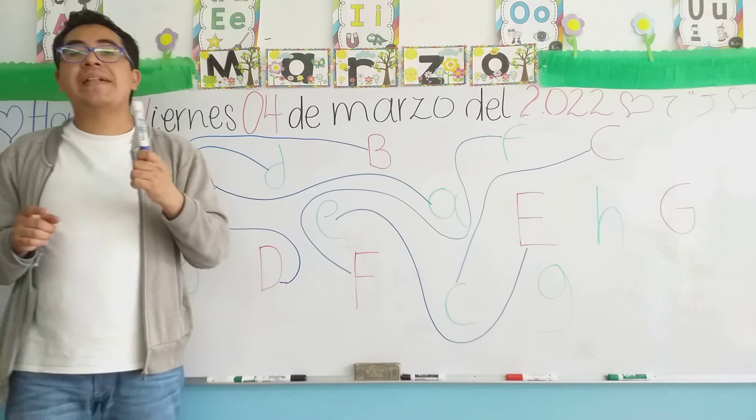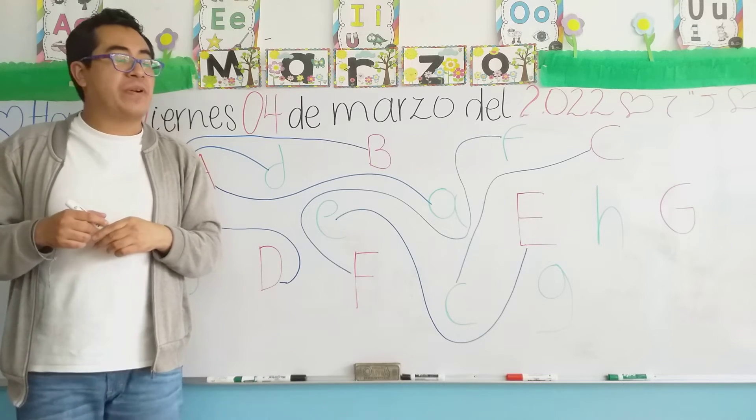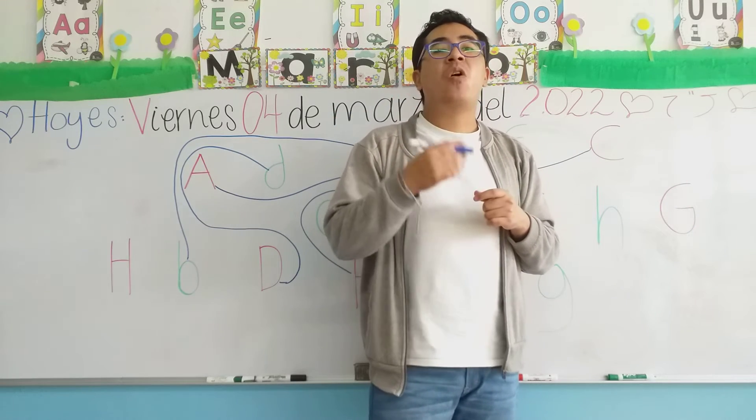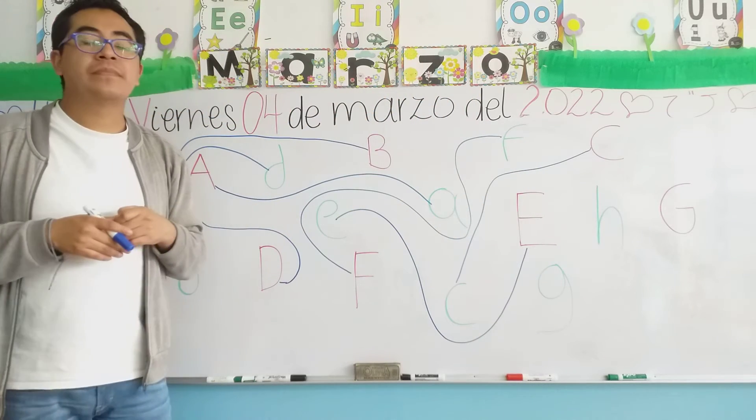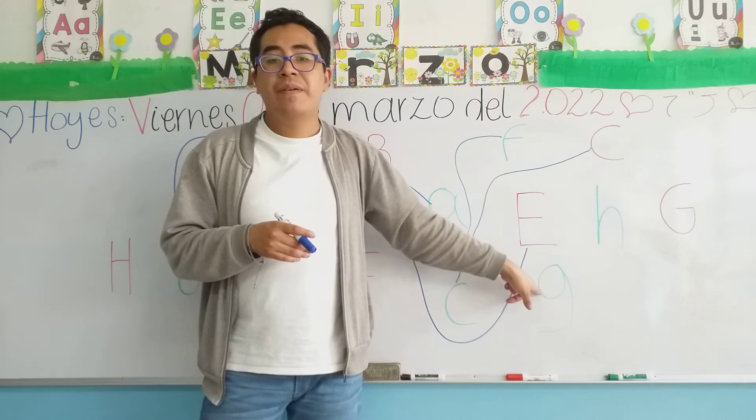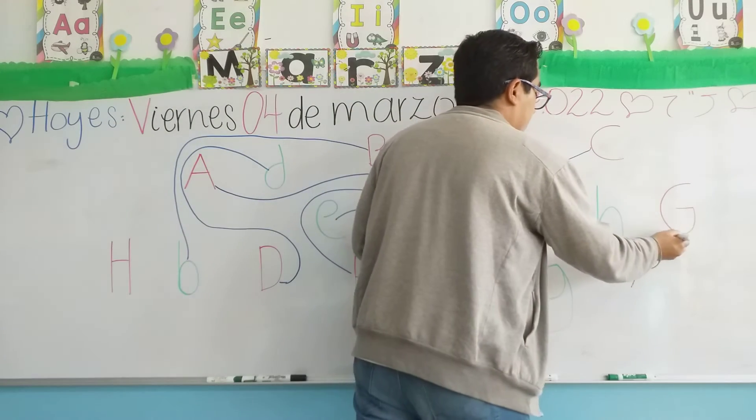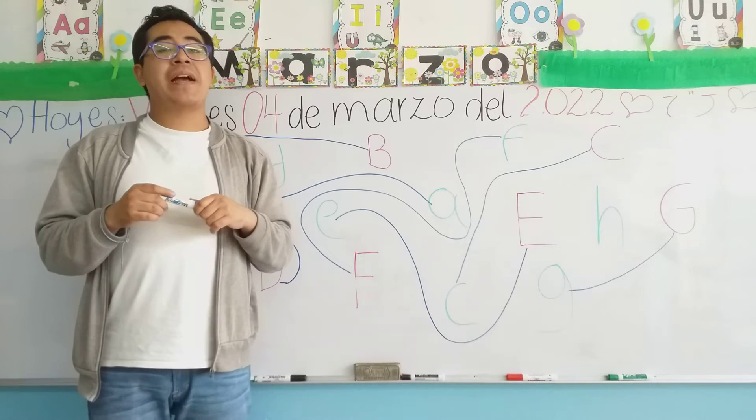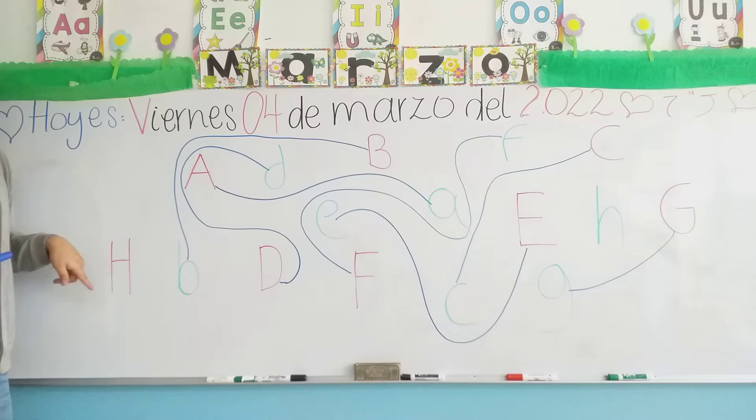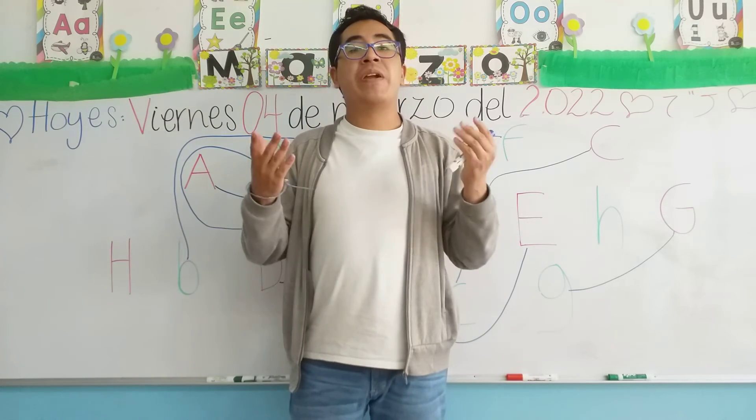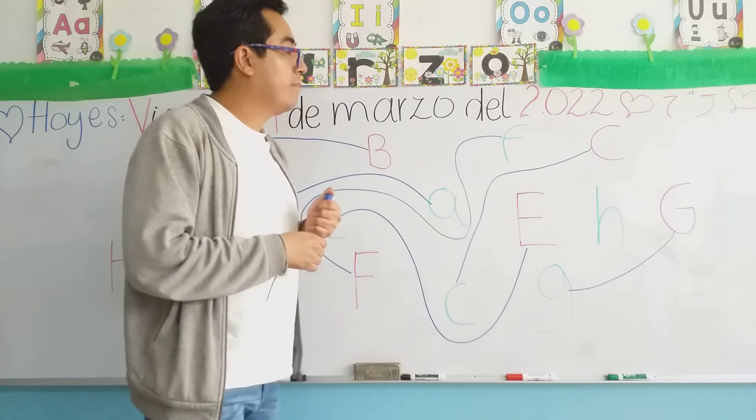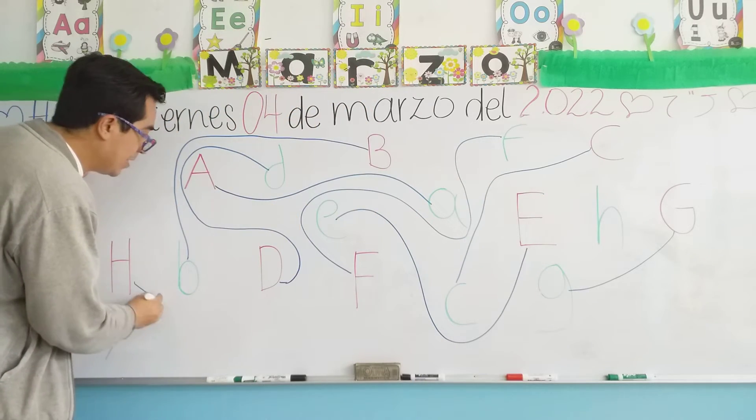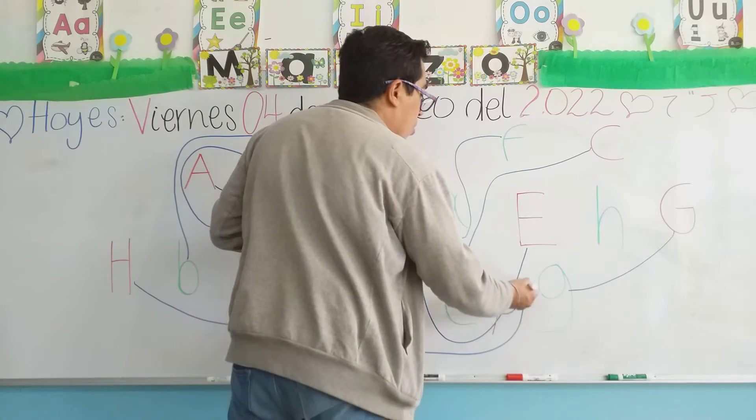So, next letter, capital G of girl, grandmother. Let's look for small g of Geraldine, of Gerardo. Capital H, capital H, which is right here in color red. Now, where is small h? It's right here. Very good. So, capital H with small h. Excellent.